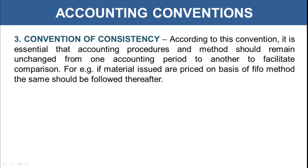Then there is the convention of consistency. According to this convention, it is essential that accounting procedures and methods remain unchanged from one accounting period to another to facilitate comparison. For example, if materials issued are priced on the basis of FIFO method, the same should be followed thereafter. Similarly, if the straight-line depreciation method is adopted, it should be consistently followed, as changing methods creates confusion in accounting transactions.